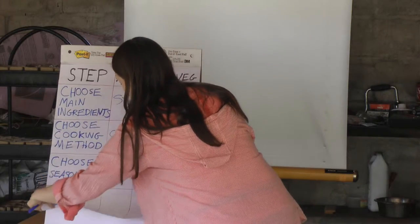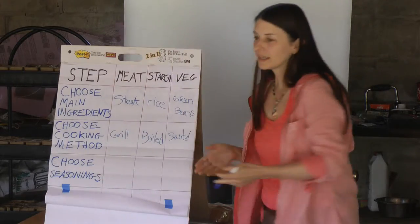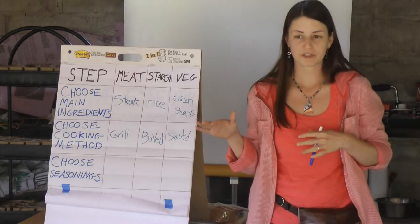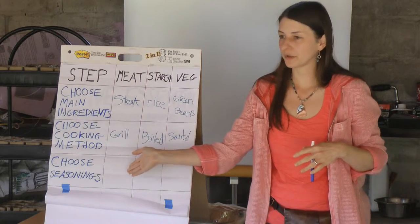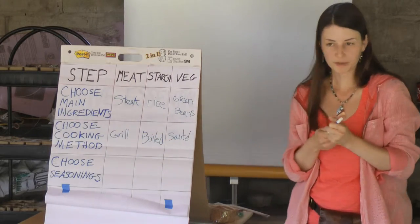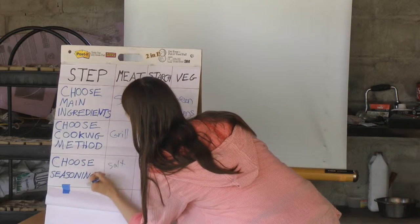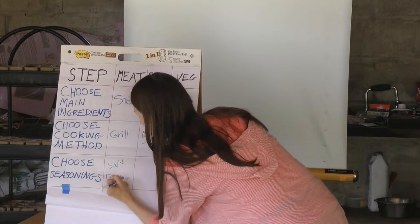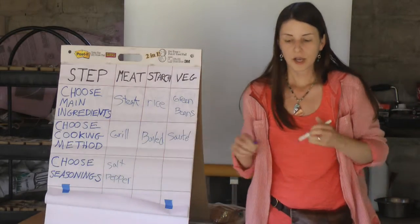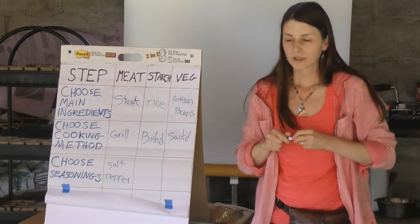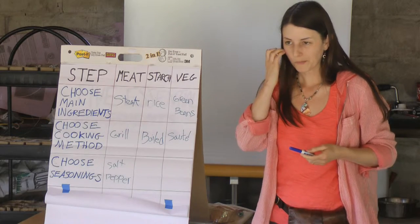Let's go down one more level of detail and choose seasonings — anything we add for flavor, not just spices but any kind of seasoning. So what are we going to season the steak with? Salt and pepper. With the rice, it's boiled — what might you do to spice it up, to perk it up a little bit? Put a little butter in it.